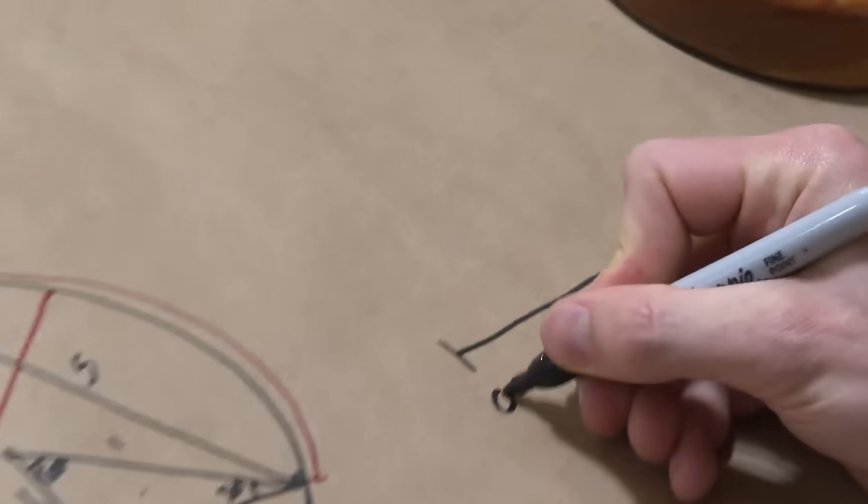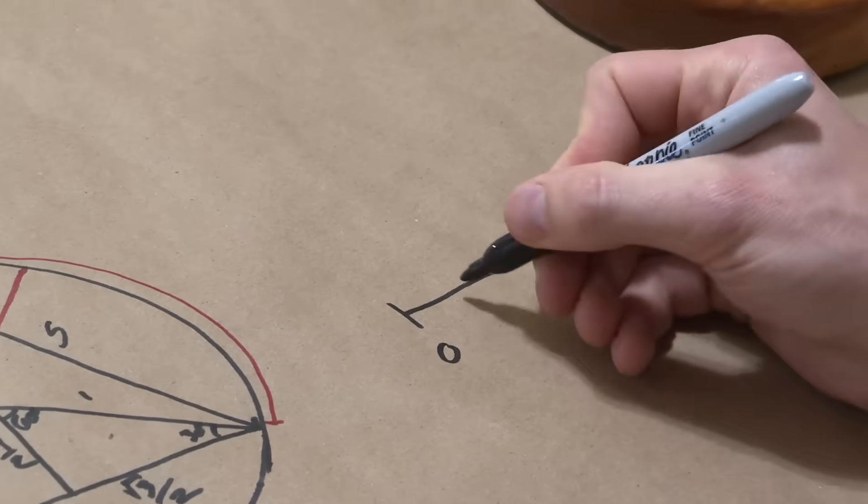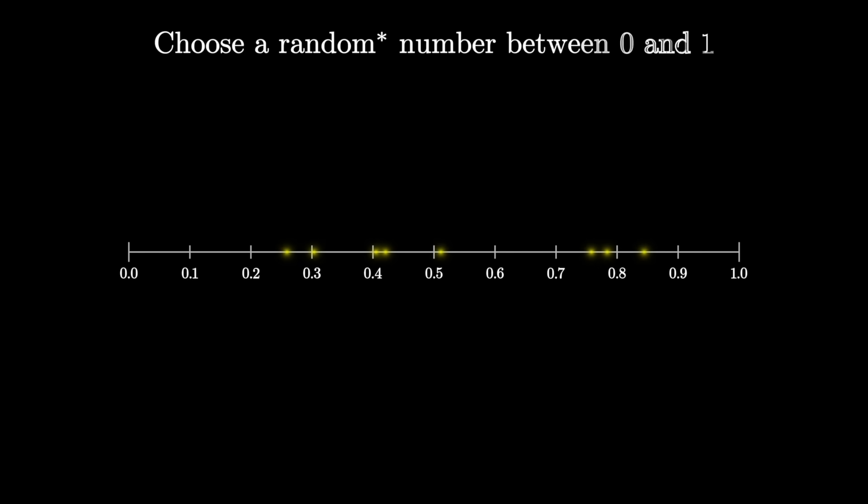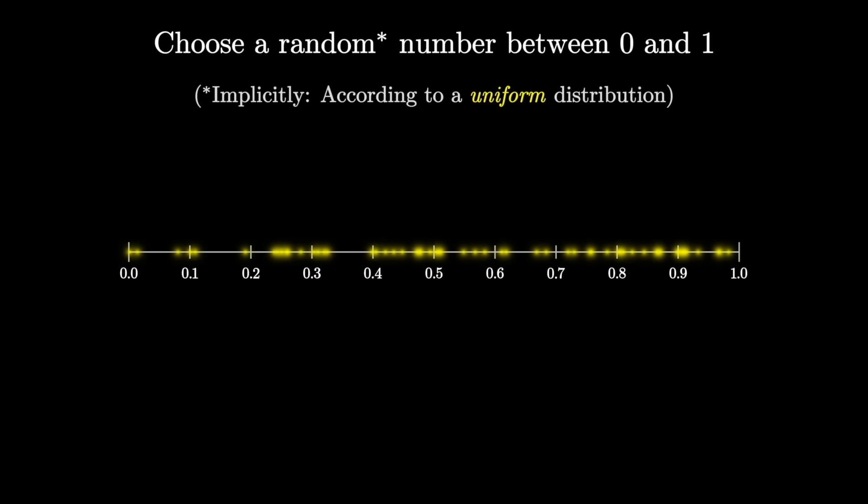Now this is a little bit worrying, because all the time in probability you start off some question or some model of the world by saying something like, you know, I want to choose a random number between 0 and 1. I say choose a random number, and it's implicit that it's going to be some kind of uniform distribution, and it's unambiguous what you mean by that randomness. Or you say,